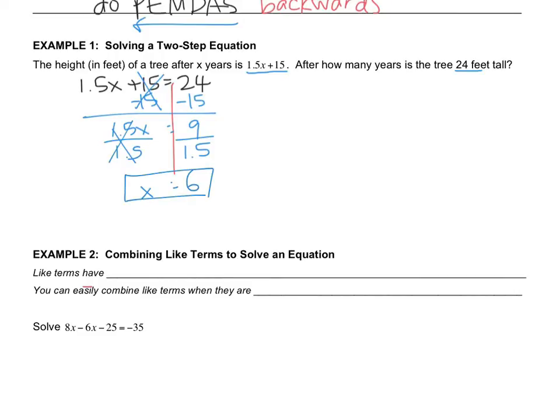So especially because I had multiple operations, it's very important that I check. It doesn't say to check, but you'll know you have it right when you check. So I'm going to rewrite the equation. 1.5, instead of x, I'm going to put a 6. And I'm going to use the parentheses instead of the x symbol because then it looks like I still have a variable.